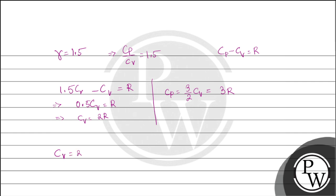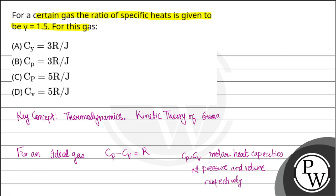So, what do we get? Cv equals to 2R and Cp equals to 3R. So, with appropriate units, the final answer will be option B where Cp is given by 3R.